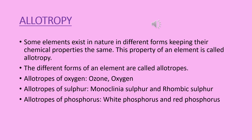Allotropes of sulphur are monoclinic sulphur and rhombic sulphur. Allotropes of phosphorus are white phosphorus and red phosphorus.